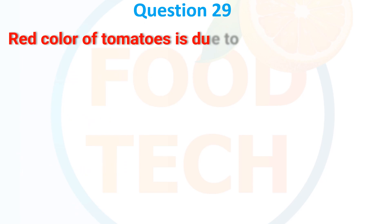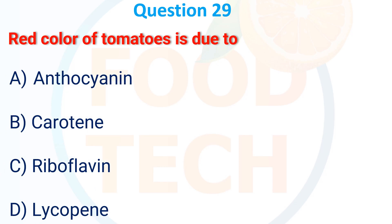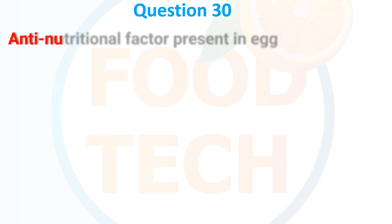Question 29. The red color of tomato is due to: A. Anthocyanin. B. Carotene. C. Riboflavin. D. Lycopene. The correct answer is D: lycopene. Question 30. Anti-nutrition factor present in: